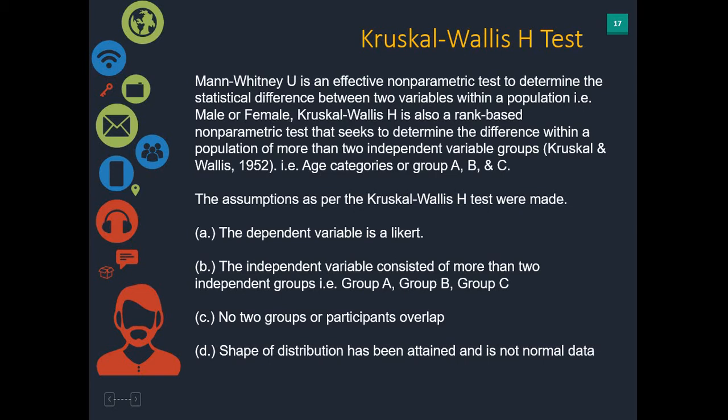Similar to all the other tests, Kruskal-Wallis H has assumptions. Your dependent variable is likert or ordinal. Your independent variable consists of more than two independent groups — group A, group B, group C. If you only had two, you would use a Mann-Whitney U. No two groups or participants overlap, so a person in group A cannot also be in group B. Finally, the shape and distribution of your data is not normal — we would have already done a normality test. This is a non-parametric test run on non-normal data.